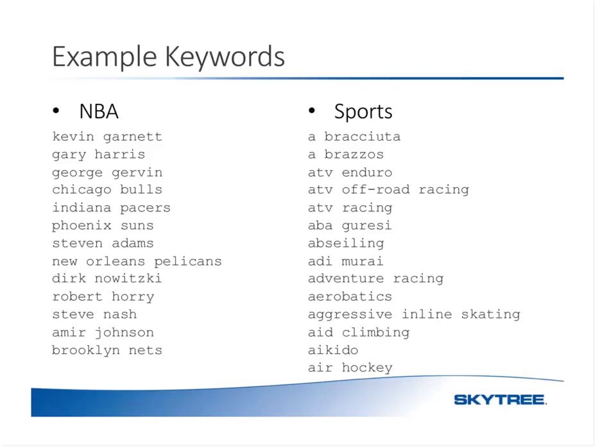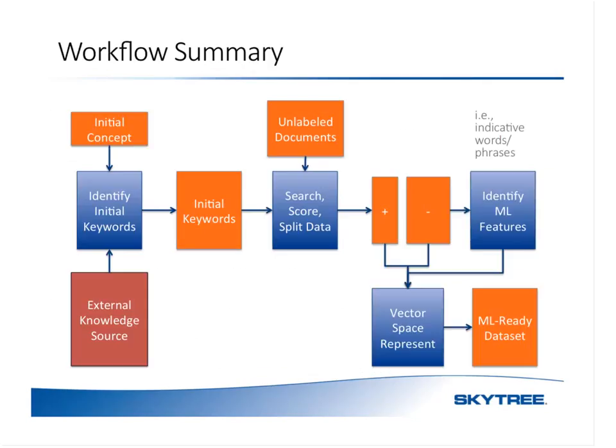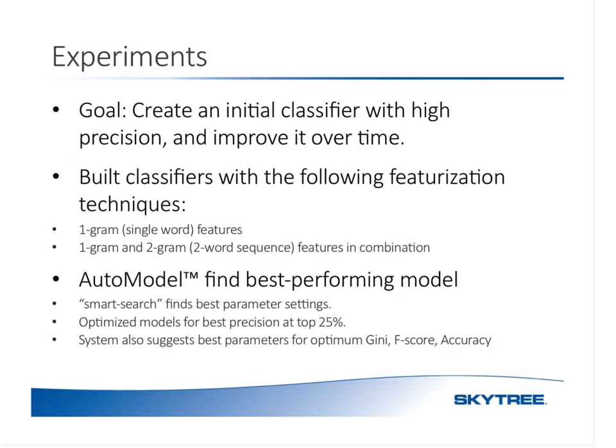We also got questions about tooling and what technologies were used. For the data aggregation and collection of keywords, we used Python and a Wikipedia dump tool to get the training set. Once we had the training set, the feature selection was done using Skytree software. The machine learning aspect — the auto model and smart search — were also Skytree software.